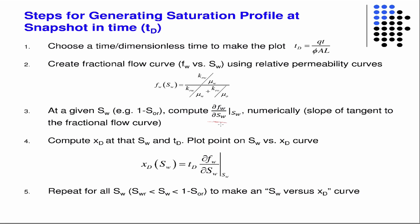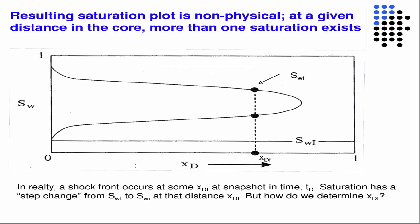So generate the curve, compute the derivative numerically by interpolating first. With that, you have a function that relates that derivative times time to your position. That allows you to make the water saturation curve as a function of position along the axis. You would do this for every possible water saturation between the initial water saturation and one minus the residual oil saturation — and that's what gives you the profile.